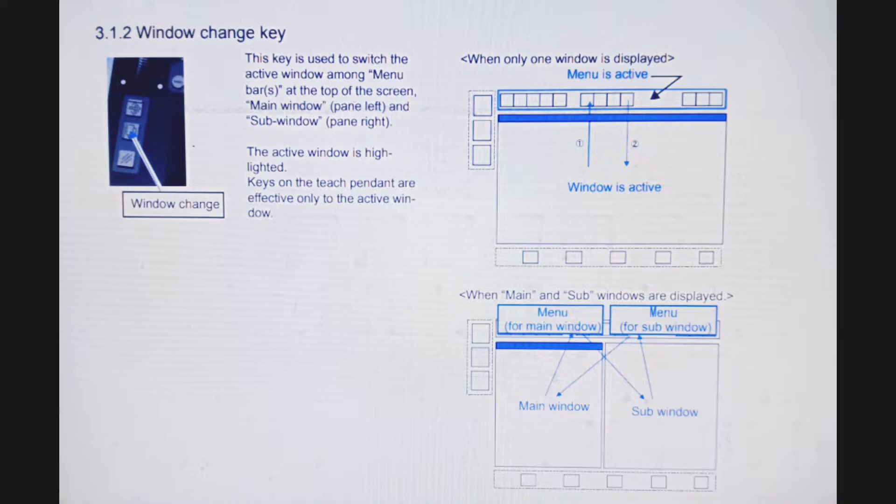In this diagram, the window is active, menu is active. Another diagram shows when main and sub windows are displayed: menu for main window, menu for sub window, main window, sub window. This is the functional diagram of window change key.